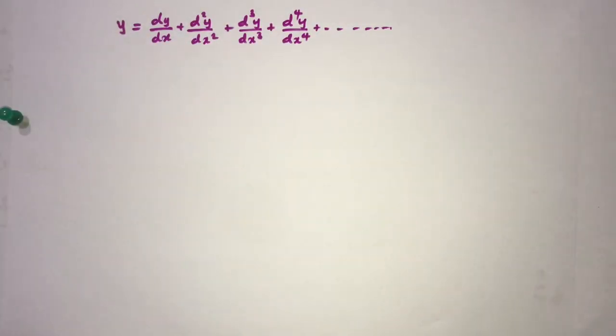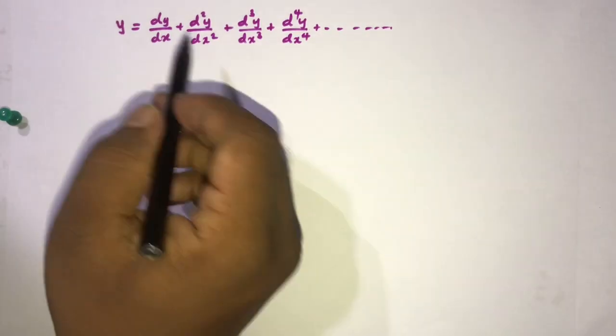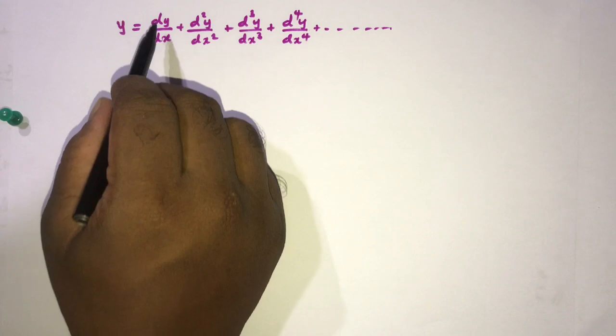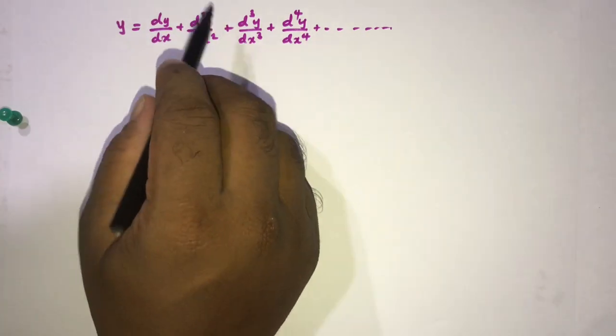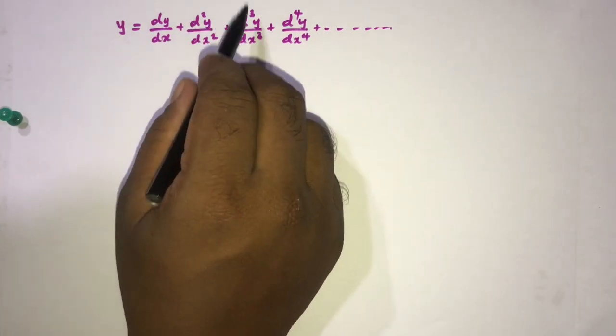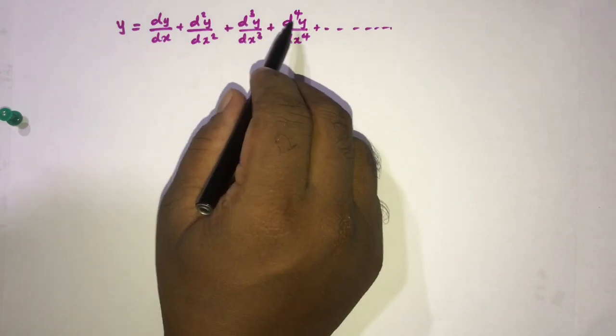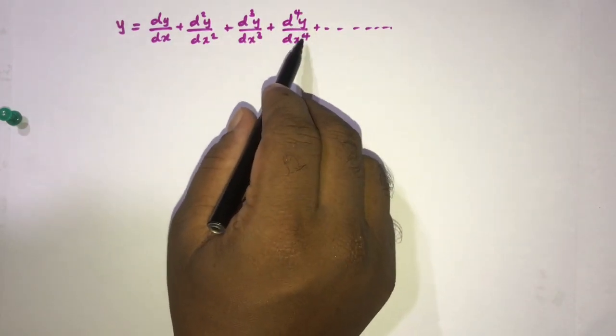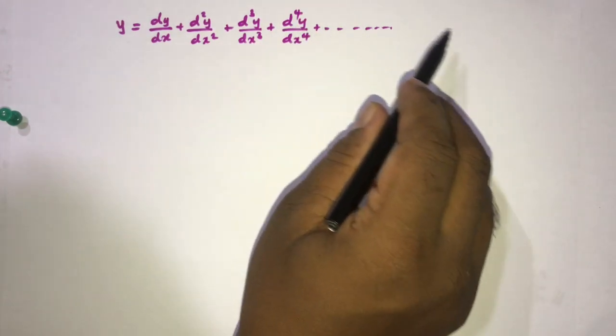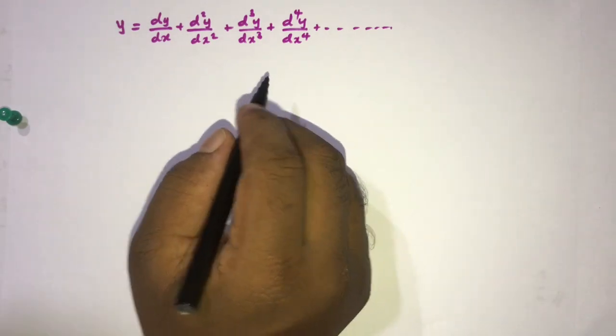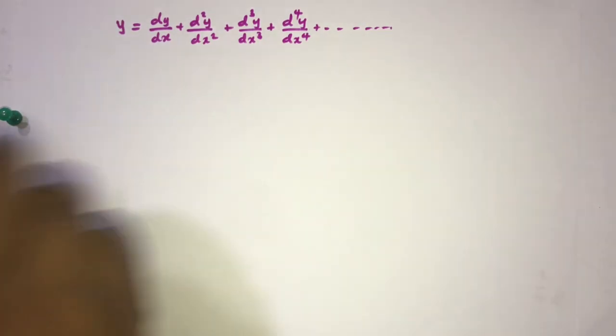Welcome to the mathematics in my channel. Today we are going to solve another interesting differential equation. We have y equals dy by dx plus d square y over dx square plus d cube y over dx cube plus d to the fourth power y over dx to the fourth power plus so on.